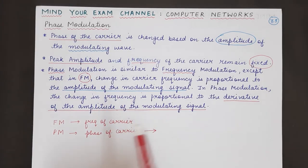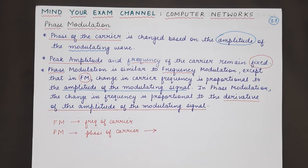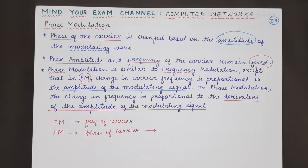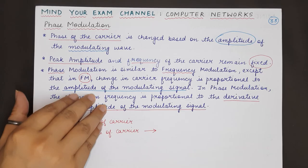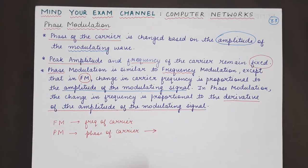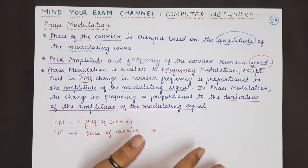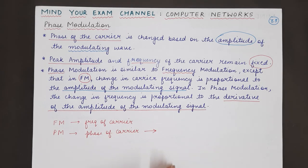This was all about analog to analog conversion. I hope you have understood all three types. If you have any doubts, you can mention them in the comment section. If you understood this concept and all three types of analog to analog conversion, please let us know in the comment section below. Hit the like button, share with your friends, and subscribe to our channel for more videos on computer science related subjects. Thank you for watching. Till we meet in the next video — Mind Your Exam.